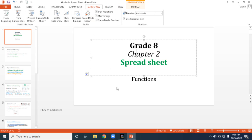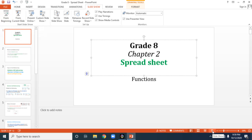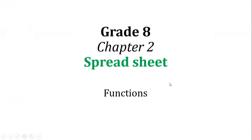Slide Show is nothing but running the presentation. After creating your presentation, it is ready for display to the end user. You can go to the Slide Show tab and choose whether to start from the beginning or from the current slide. The status bar also has a separate Slide Show icon — clicking it starts the presentation from the current slide. In Slide Show mode, the presentation is displayed in full screen and you cannot edit anything. The shortcut key for Slide Show is F5, and to start from the current slide it is Shift + F5.